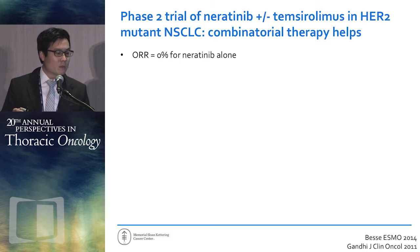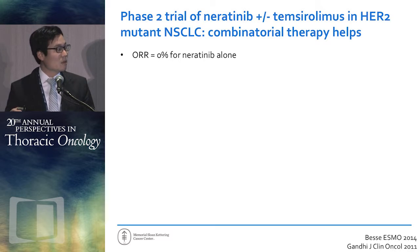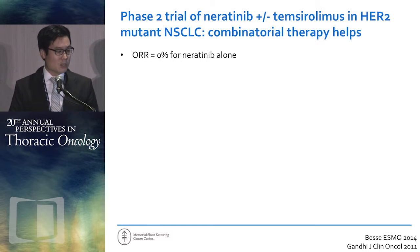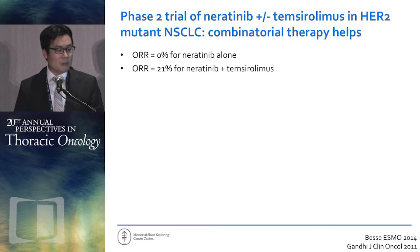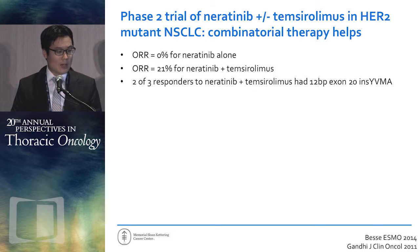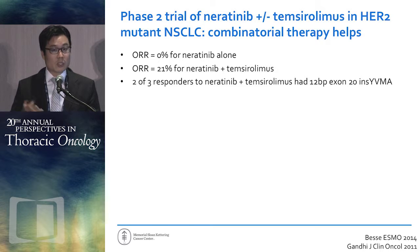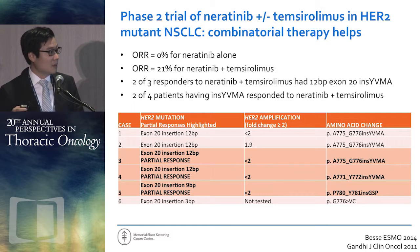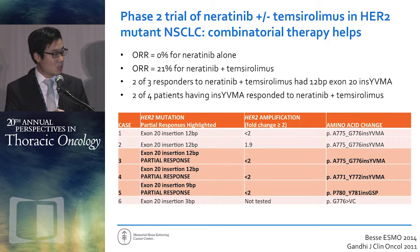Neratinib and neratinib with or without temsirolimus were also studied in phase 1 and phase 2 trials in HER2 mutant lung cancer, initially presented by Lina Gandhi and published in JCO in 2011. The response rate to neratinib alone is 0%. But when you add temsirolimus to neratinib, based on preclinical data, you get a response rate of 21%. Two of the three responders had YVMA insertions, which is different from what was seen with dacomitinib.